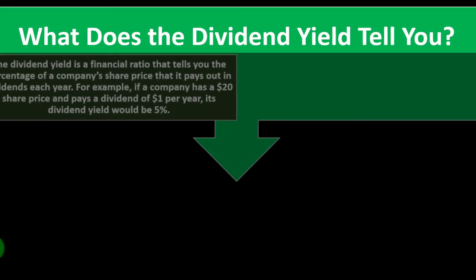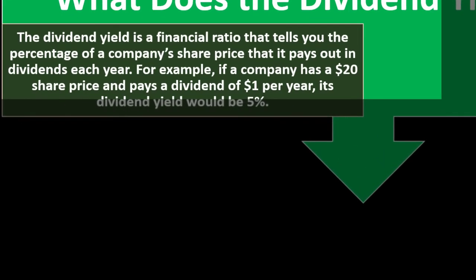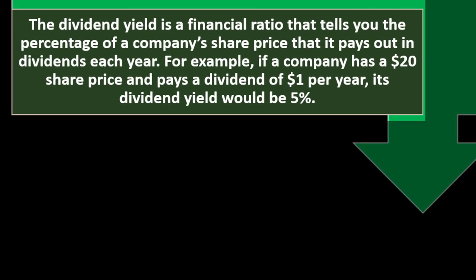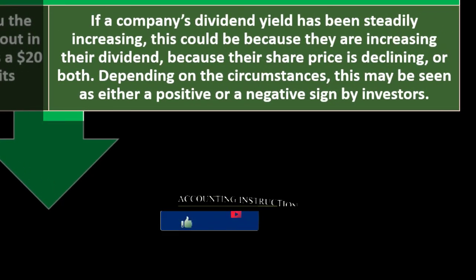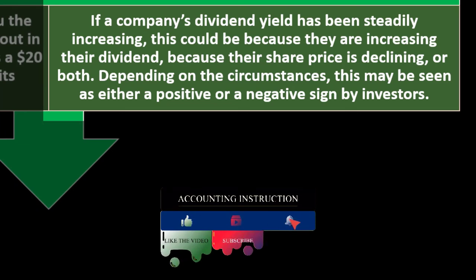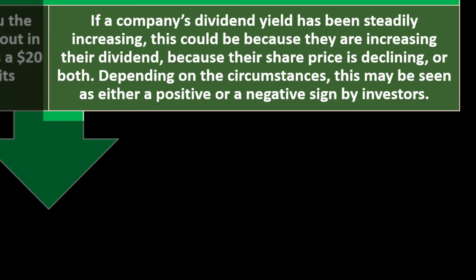What does the dividend yield tell you? The dividend yield is a financial ratio that tells you the percentage of a company's share price paid out in dividends each year. For example, if a company has a $20 share price and pays a $1 dividend, its dividend yield is 5%. If a company's dividend yield has been steadily increasing, it could be because they are increasing their dividend, their share price is declining, or both. Depending on the circumstances, this may be seen as either a positive or negative sign by investors.